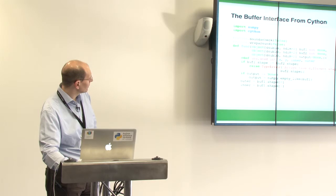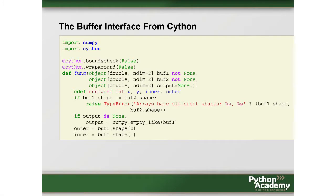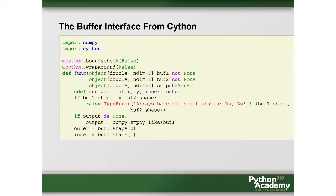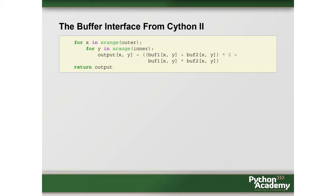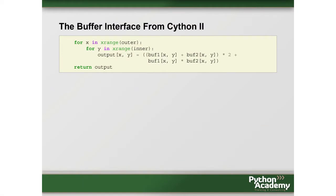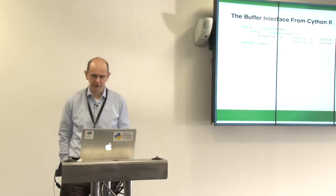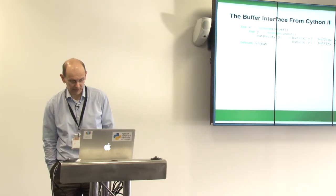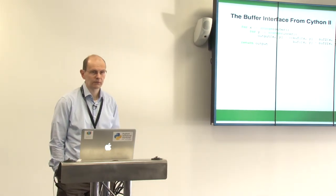Then I write loops using x-range for x and y — something you normally avoid in Python for speed, but here it goes to Cython and gets translated to C. The calculation is: buffer1[x,y] + buffer2[x,y] * 2 + buffer1[x,y] * buffer2[x,y] — that's A plus B times 2 plus A times B. In NumPy you'd want to avoid element-wise loops at all costs, but in Cython it's different because this gets translated to a C loop.